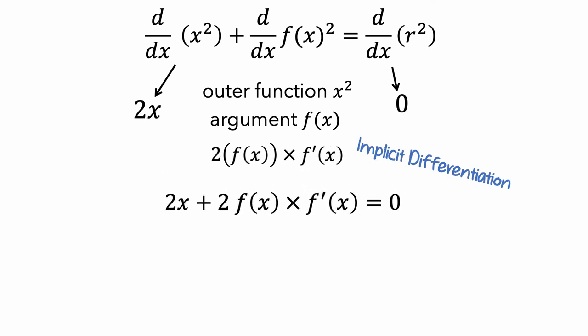Putting this together, we have 2x plus 2 f(x) times f'(x) equals 0. We can do some algebra, and we'll get that f'(x) is negative x over f(x).